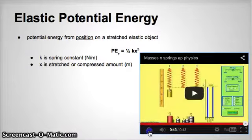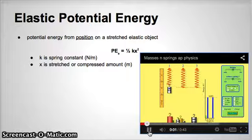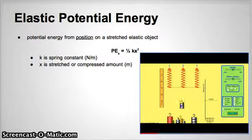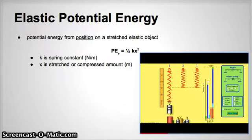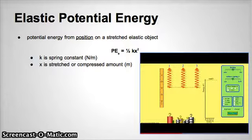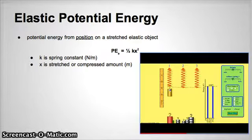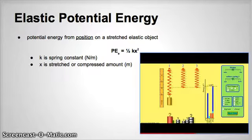The other type of mechanical potential energy is elastic. This type of potential energy is based on the position of a stretched object, such as a spring. The equation for elastic potential energy is shown here. Note that this type of mechanical potential energy is dependent upon a constant K, which is different for every spring, and X, the distance the spring is stretched or compressed from its normal position.